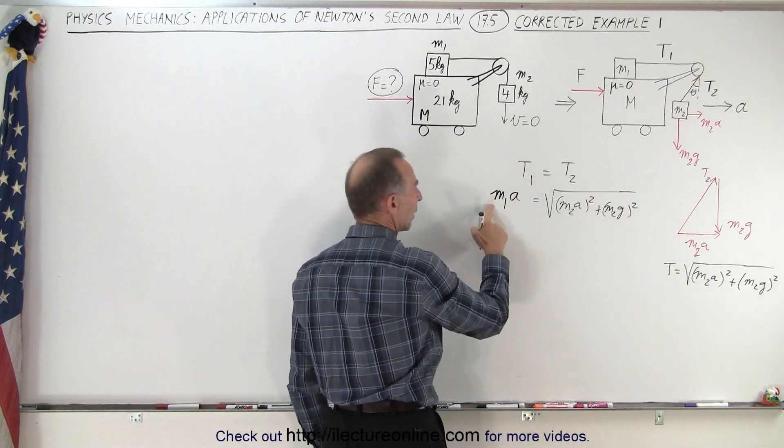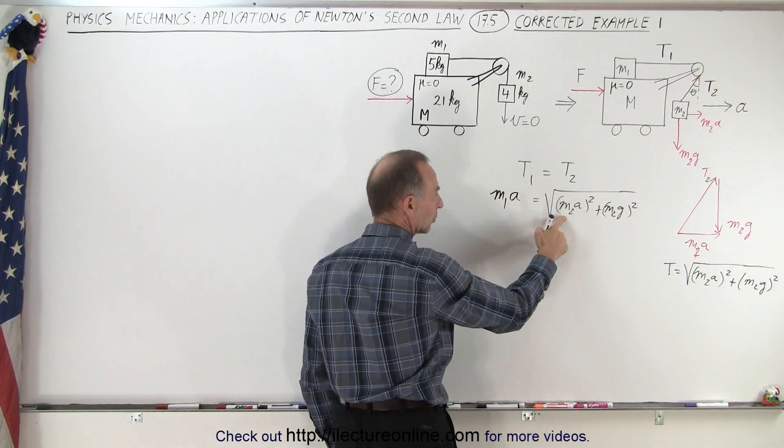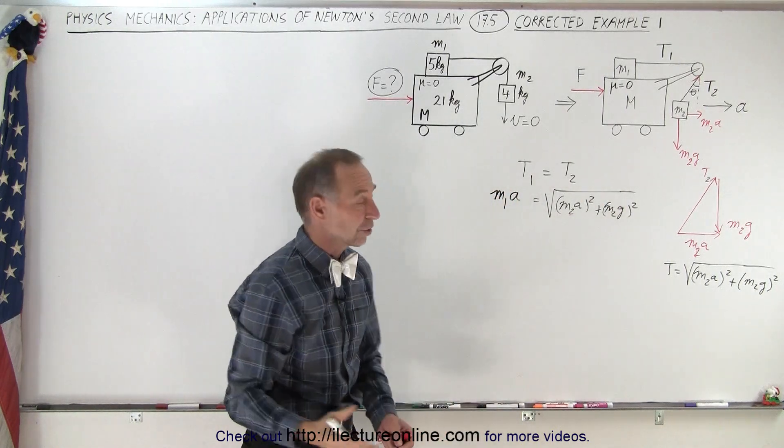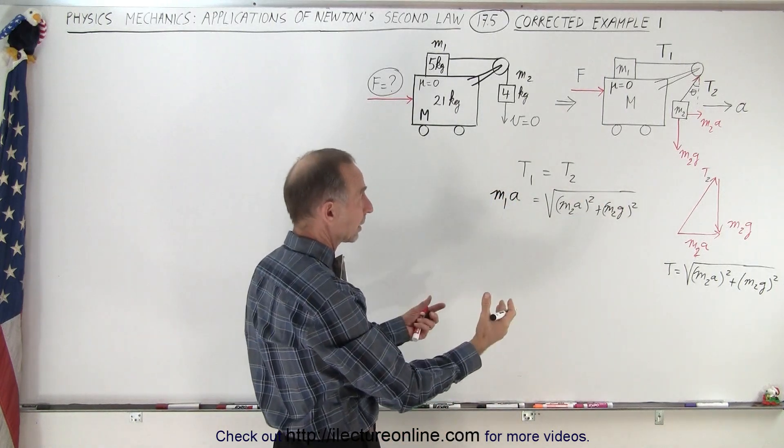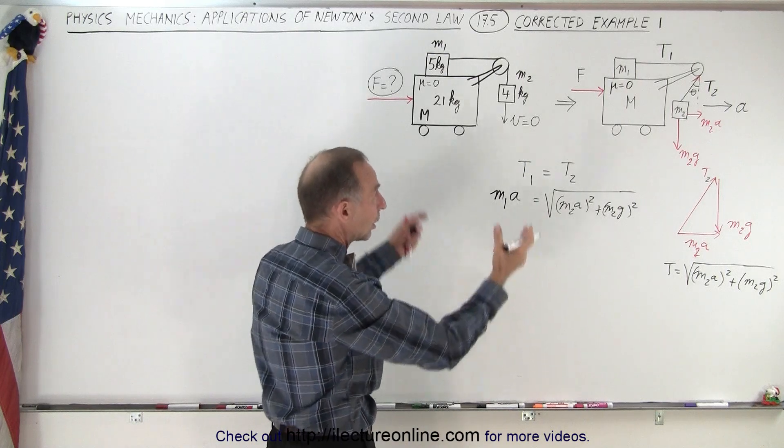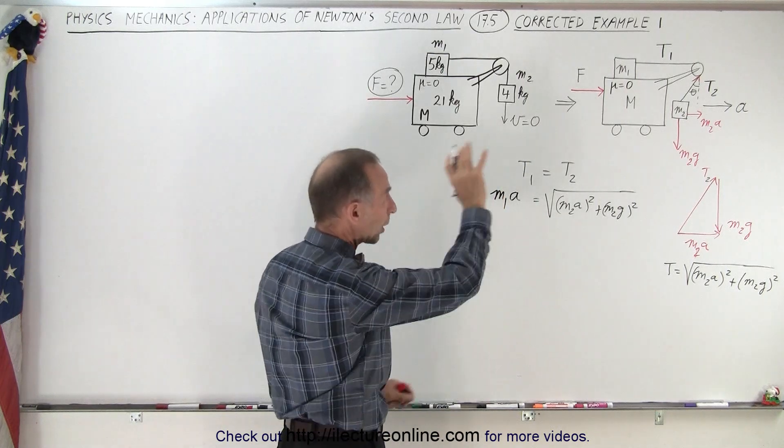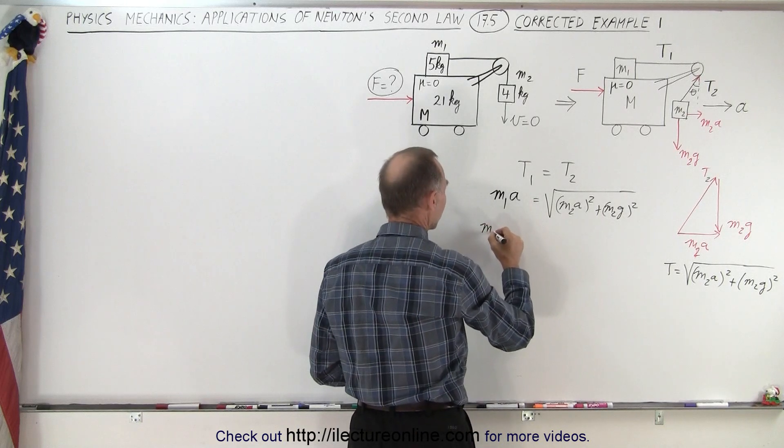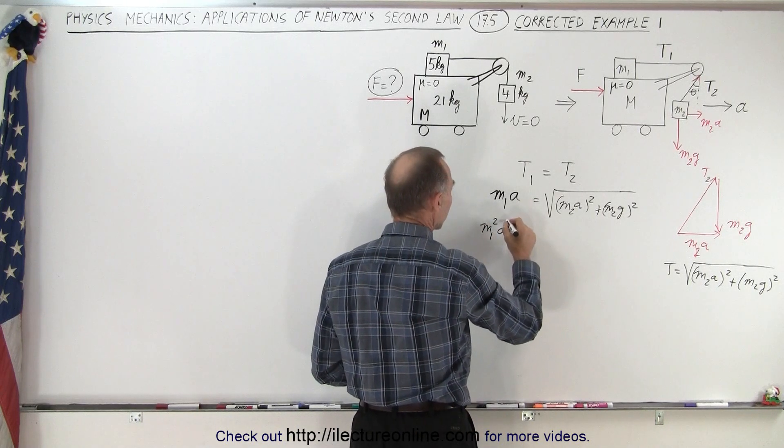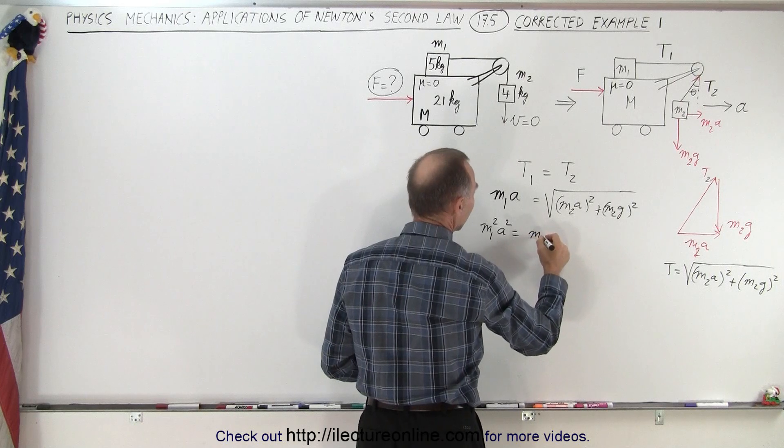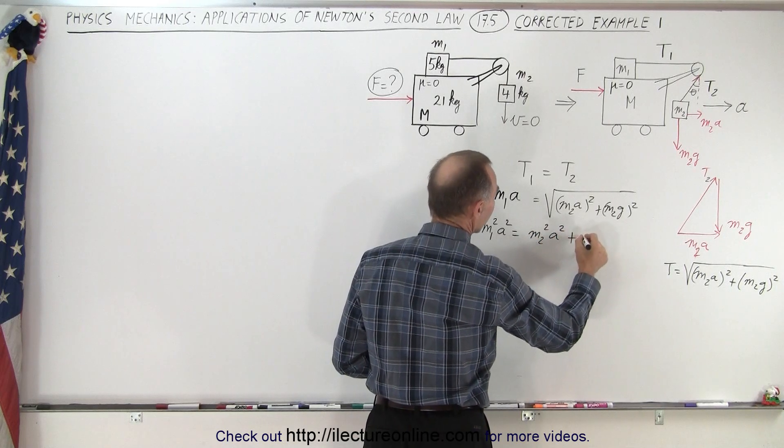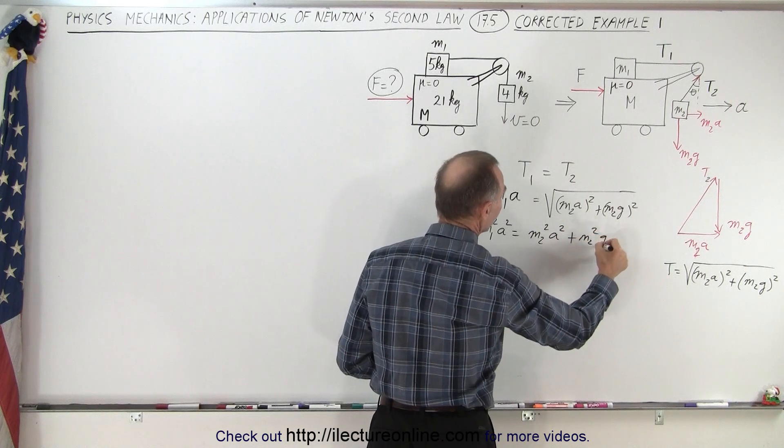Now realizing that we know what m1, m2, and g are equal to, this equation only has one unknown, the acceleration. So from this, we should be able to calculate the acceleration necessary to keep everything in place relative to the system. We're going to square both sides, so we have m1 squared a squared is equal to m2 squared a squared plus m2 squared g squared.